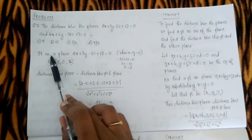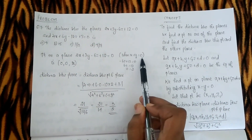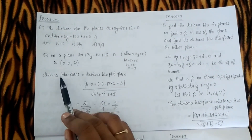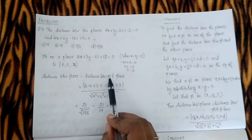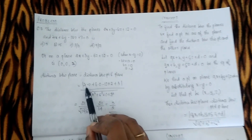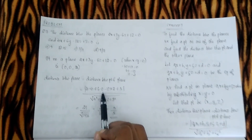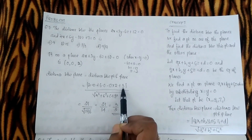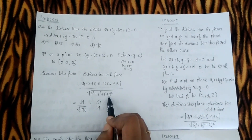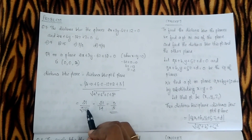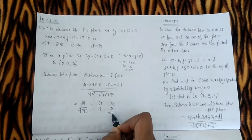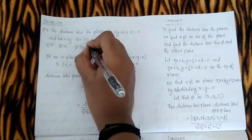The first plane gives a point: when x = y = 0, the point is (0, 0, 2). Therefore the distance between the planes equals the distance from this point to the second plane, which is |4(0) + 6(0) − 12(2) + 3| / √(4² + 6² + 12²) = 21 / √196 = 21/14 = 3/2. The correct option is 3/2.